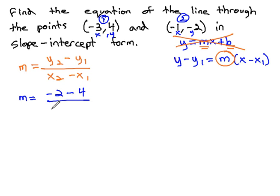over x₂, which is negative 1, minus x₁, which is negative 3, and simplifying to get negative 6, and adding the opposite in the denominator to get 2, which will reduce to our slope of negative 3.